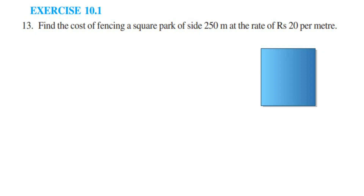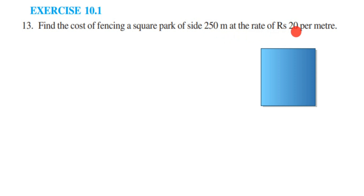Hi everyone, here I am doing Exercise 10.1, 13th question. Chapter is Mensuration of Class 6. The question is: find the cost of fencing a square park of side 250 meters at the rate of rupees 20 per meter.